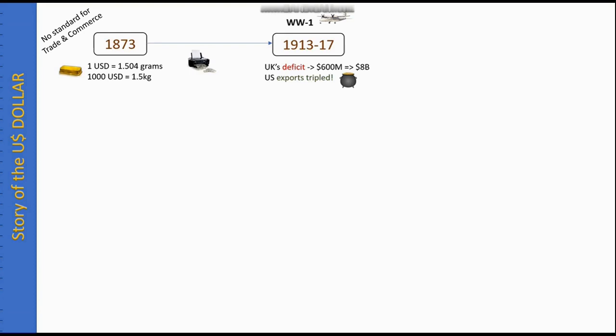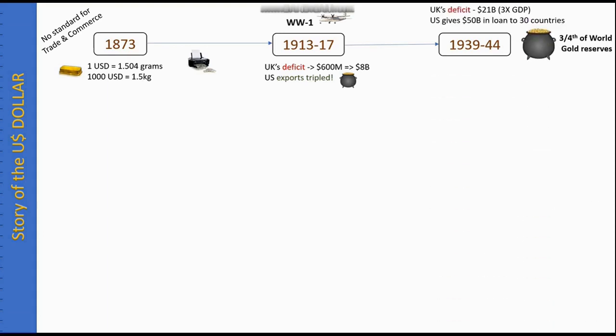Fast forwarding to the Second World War era, the UK was again heavily involved while the US stayed out until Pearl Harbor. The UK's deficit rose to 21 billion dollars — three times their gross domestic product. To compare: the UK's debt before World War One under the gold standard was 600 million dollars, and it rose to 21 billion dollars by the end of World War Two.